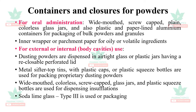Packaging includes three types: primary packaging — glass, plastics, and metals; secondary packaging — outer cartons; and tertiary packaging, suitable for bulk packaging. For oral administration, wide-mouthed screw-capped colored glass jars or plastic material are used. Inner wrapper or parchment paper is used for oily or volatile ingredients. For dusting powders, airtight glass or plastic jars with reclosable or perforated lids are used; metal sifter top tins and plastic squeeze bottles are also used.